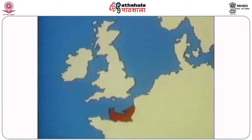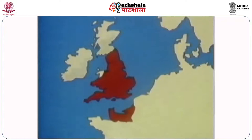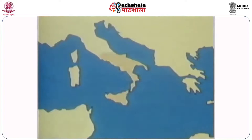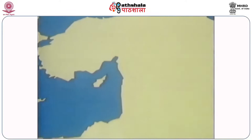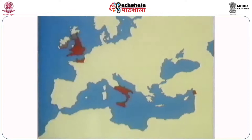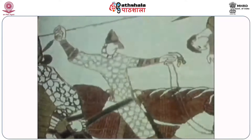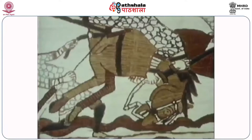They conquered England, overran parts of Scotland and Ireland, made conquests in Italy and Sicily, and their power spread as far as the great city of Antioch, in what is now modern Syria. The Bayeux tapestry shows us what a fearsome fighting force the Normans were, and their most dramatic achievement was the conquest of England.